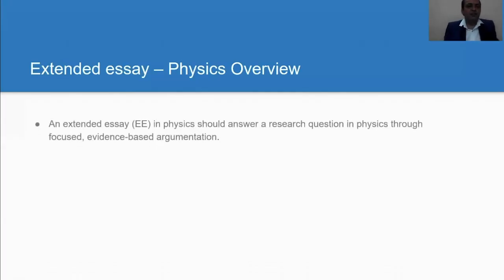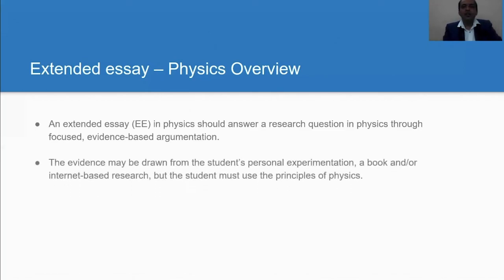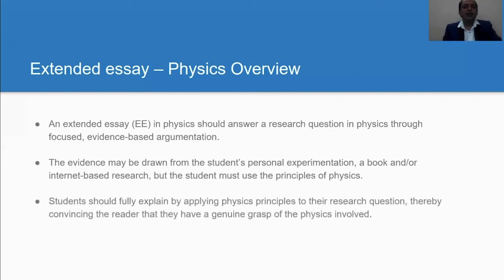If a student is choosing physics as a subject for extended essay, he or she should be able to answer the RQ through focused evidence-based reasoned argument, and this evidence may be drawn from the student's personal experimentation, a book, or internet-based sources. But the student must use principles of physics and should be able to fully explain by applying physics principles to their argument, so the reader is convinced that the student has a genuine grasp of the physics involved.